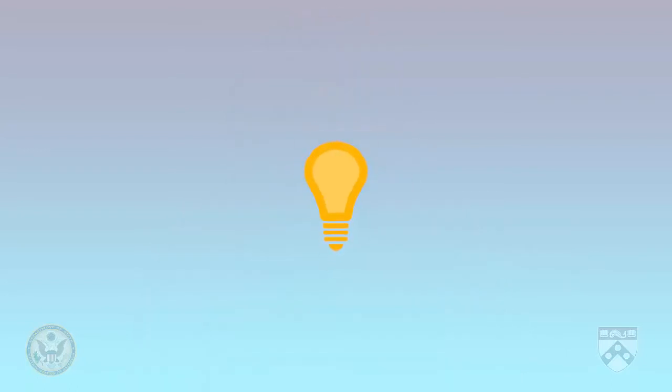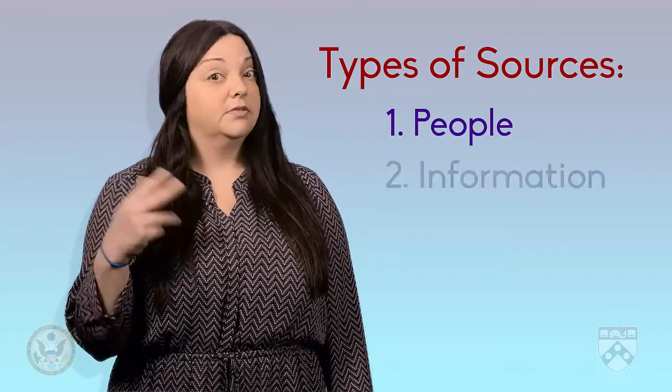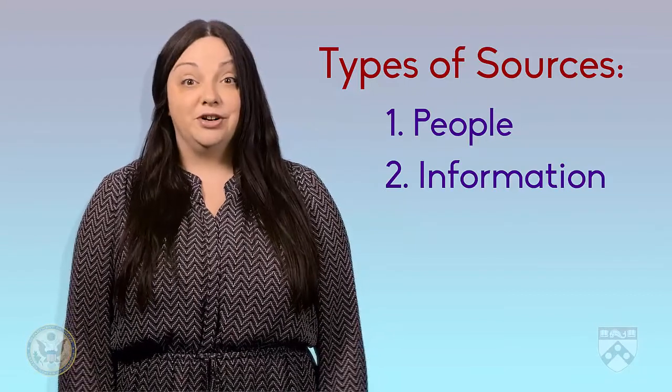After a journalist knows their topic and story type, they can start to research their idea. Generally, journalists use more than one source when writing an article. Let's take a look at gathering sources. The biggest part of researching your story is gathering sources. There are two types of sources: people and information. Let's talk about people first.